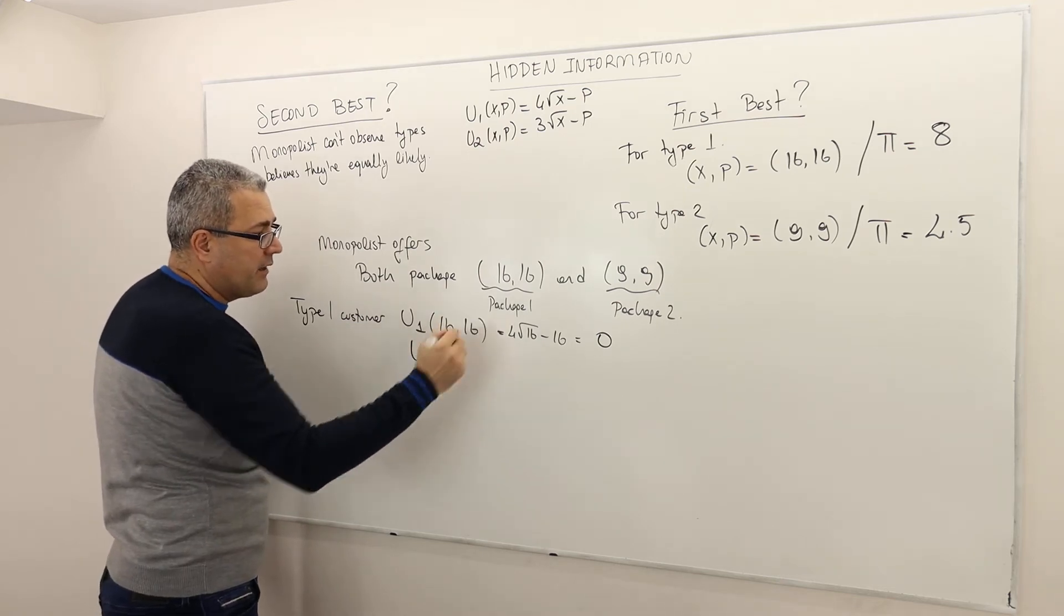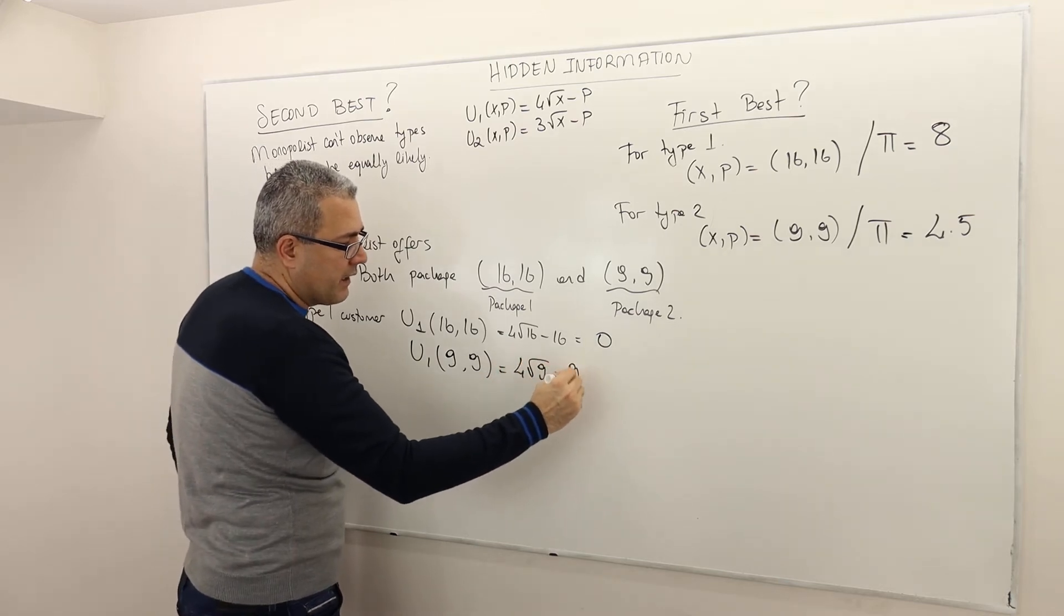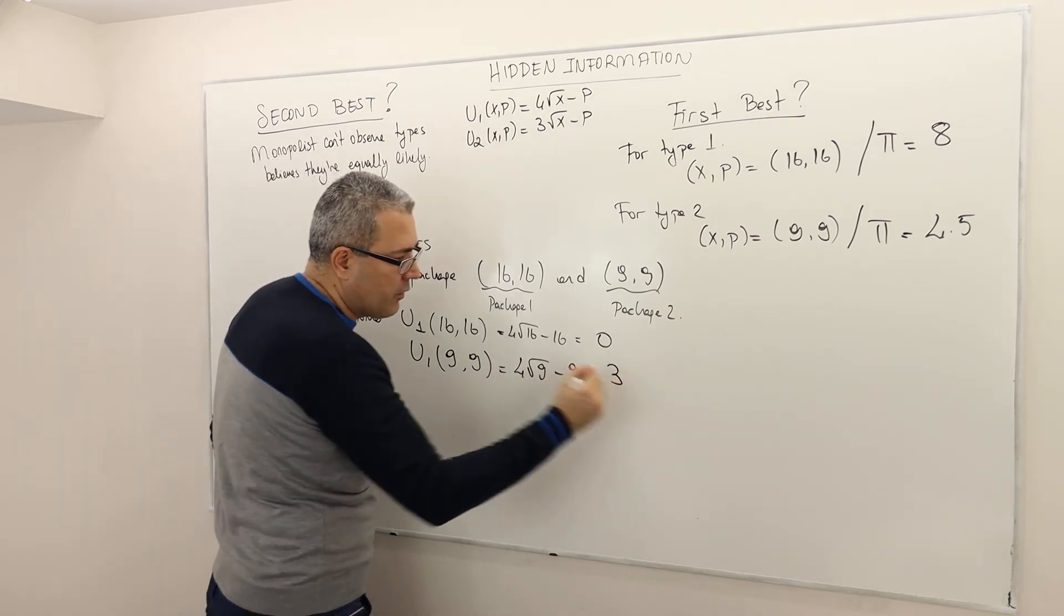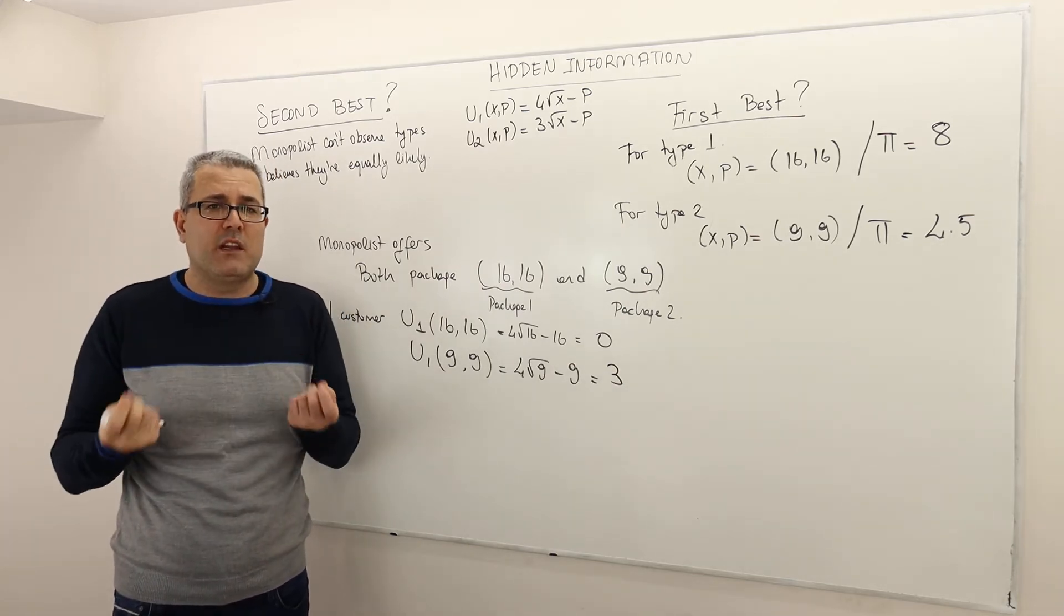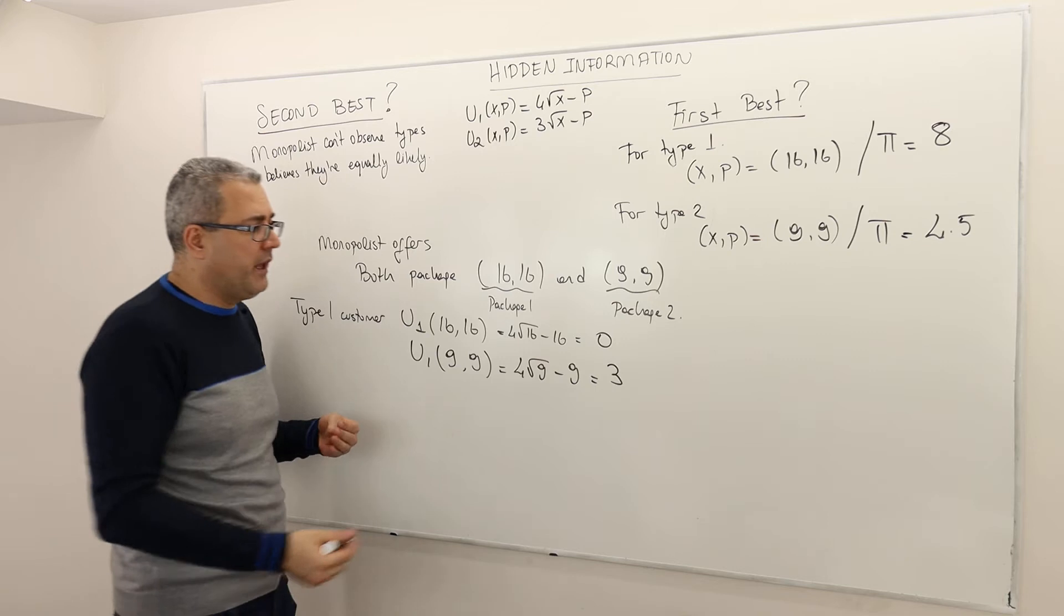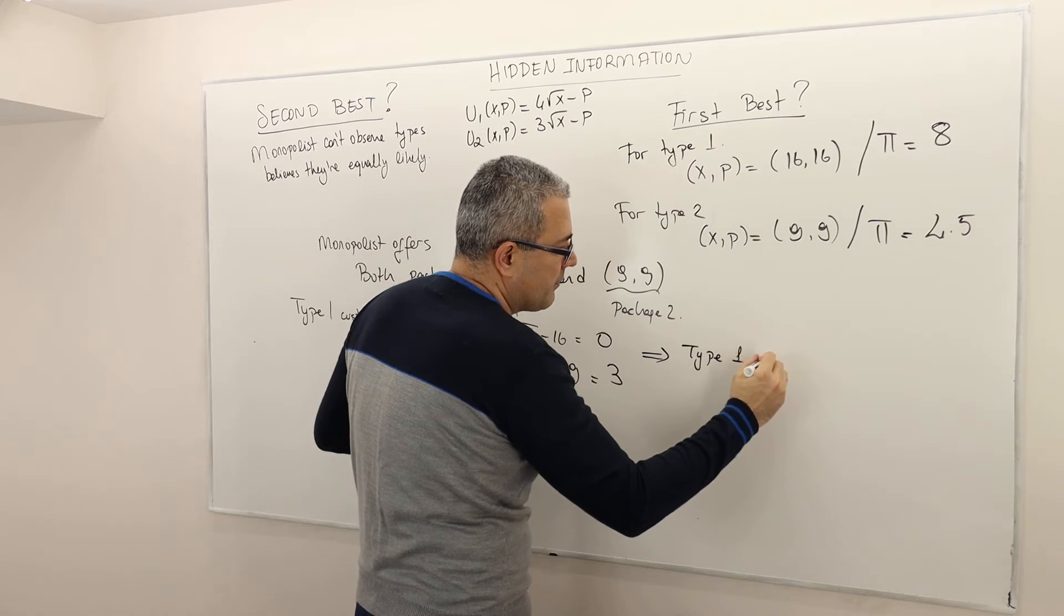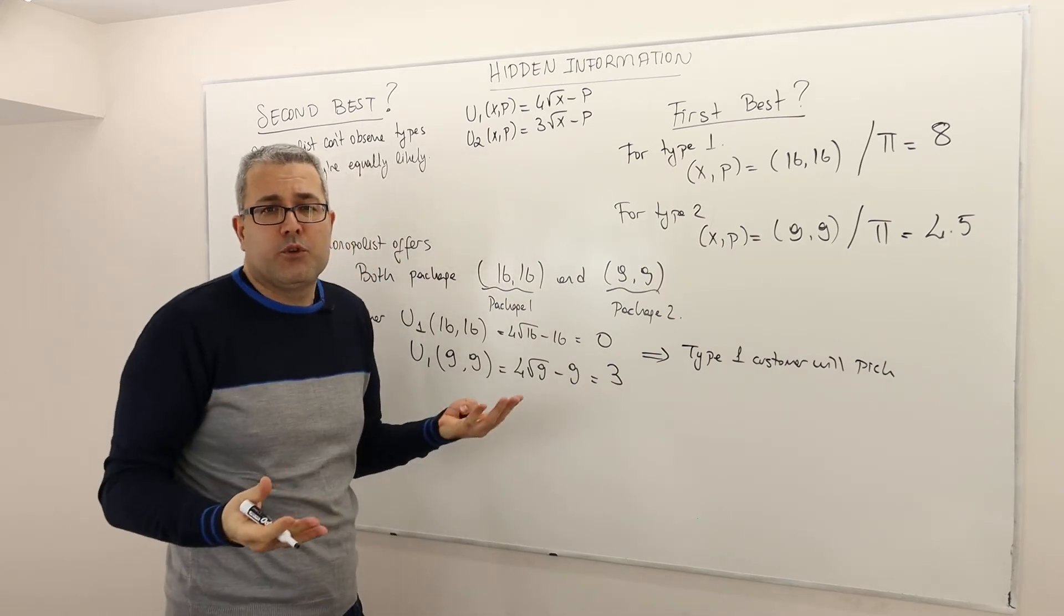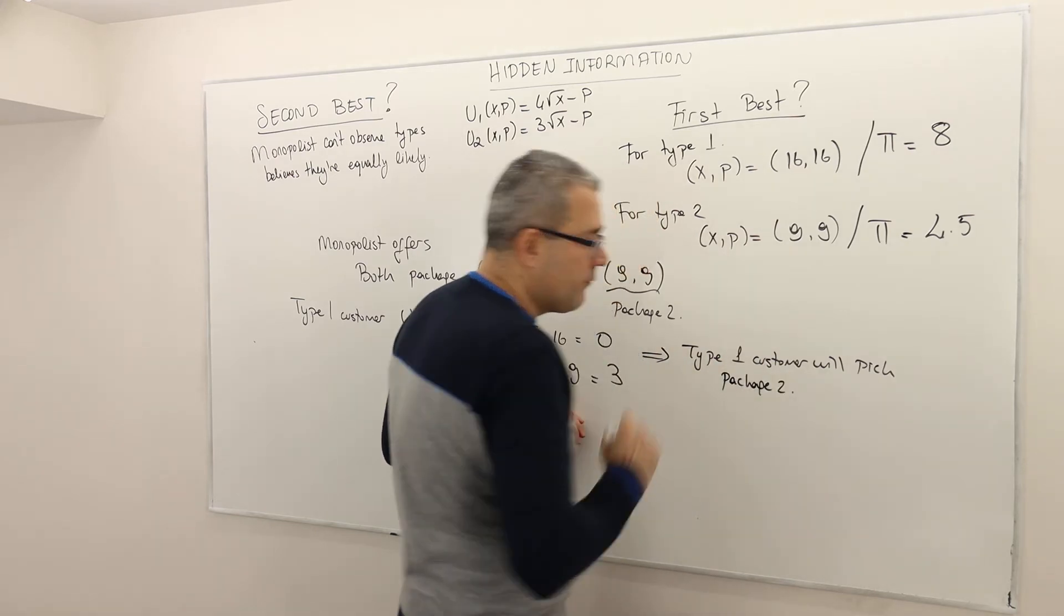What about I buy the nine comma nine? Well, in this case 4√9 - $9. So my utility here is going to be 12 - 9, so three. Well, don't forget the customers are rational agents. They want to maximize their utilities as well. So which package is type one customer going to pick? Obviously the second package. So type one customer will certainly pick, because it gives higher utility, will pick package two.